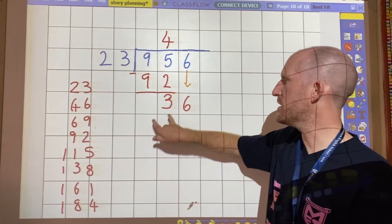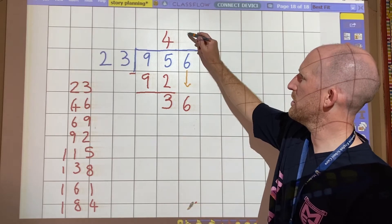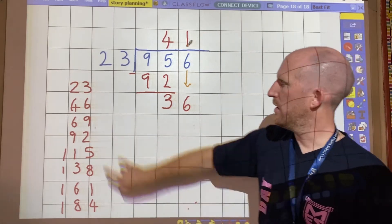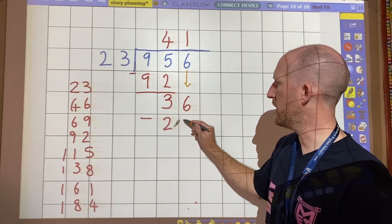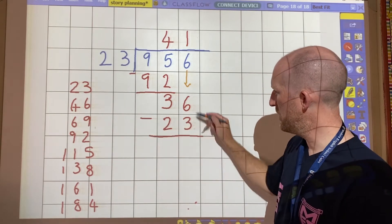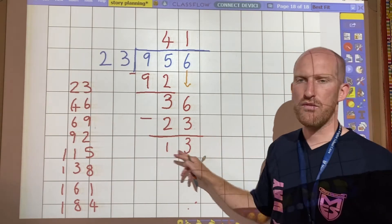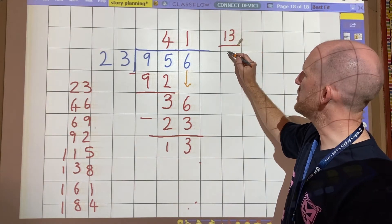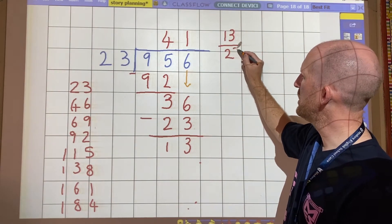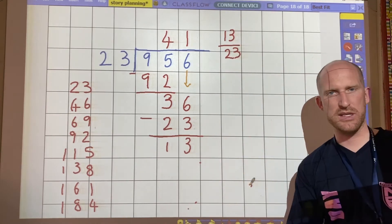So can you see how now I have 36? How many 23s in 36? There is one. And then I take away 23. Take away 23. 13 remained there. So the answer to this question is 41 and 13 23rds.